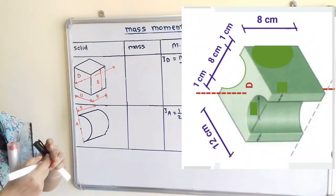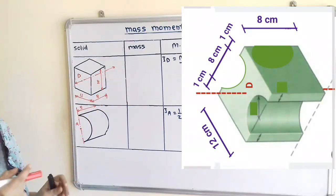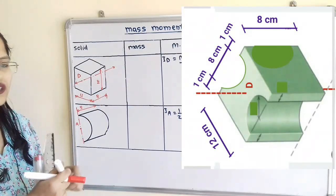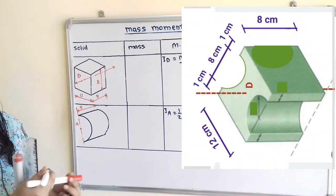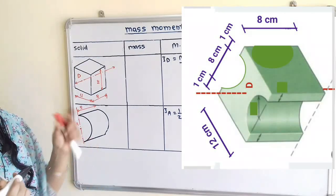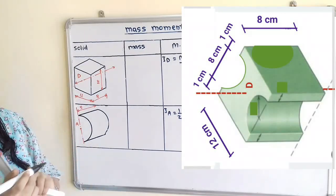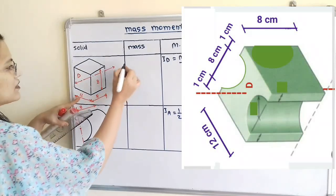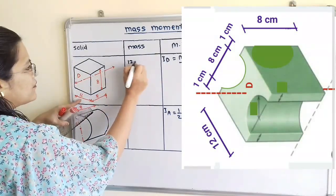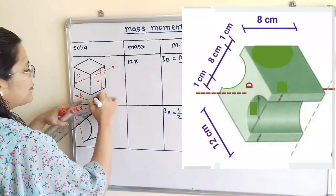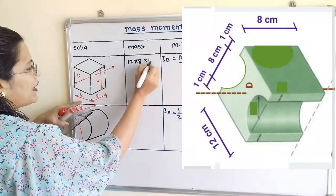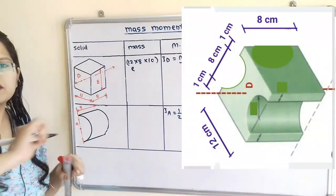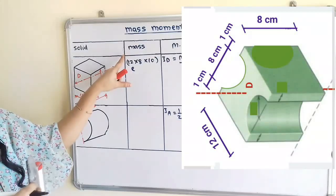First we will calculate the mass. The mass is not mentioned in the question but the dimensions are given, so mass is equal to volume multiplied by density. The volume of this block is equal to base 12 multiplied by width 8 multiplied by height 10 multiplied by density rho. This is the mass.